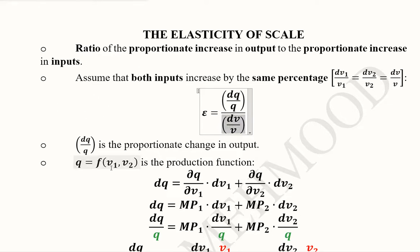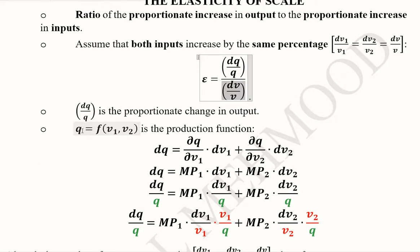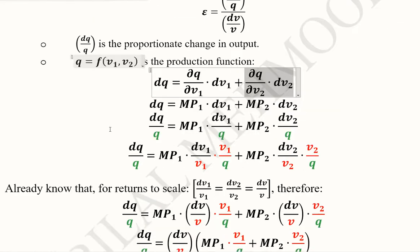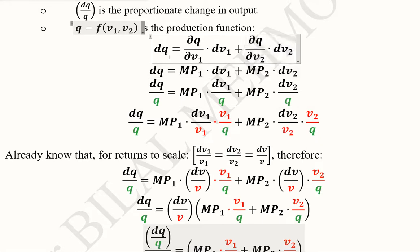This is the production function in its general form — the output and the inputs one by one. We can differentiate this production function, and in this case the differentiation is for the purpose of taking the total differential, because we have two independent variables — two inputs — and we want to observe their total effect on the output. It is not the rate of change; it is the change in output due to the first input and due to the second input.